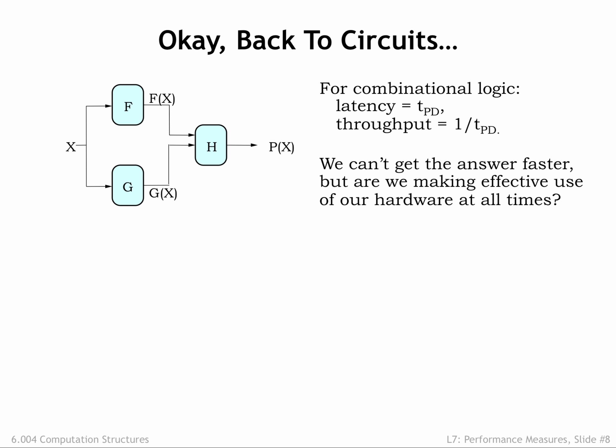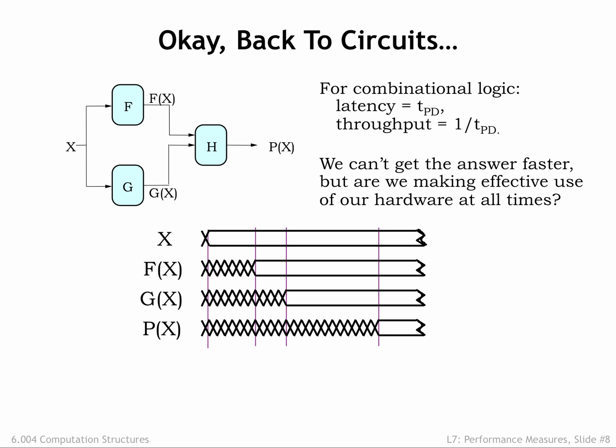Consider a combinational system with three components, F, G, and H, where F and G work in parallel to produce the inputs to H. Using this timing diagram, we can follow the processing of a particular input value, X. Sometime after X is valid and stable, F and G modules produce their outputs, F(X) and G(X).